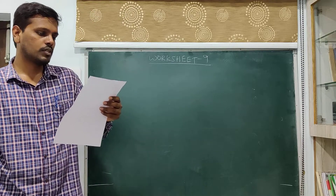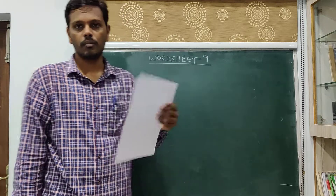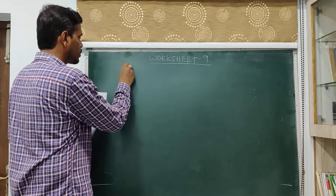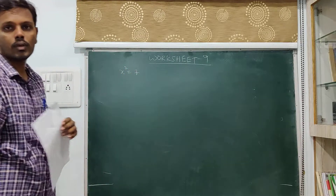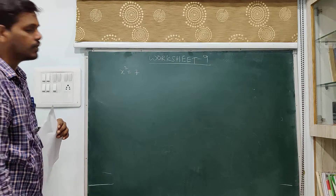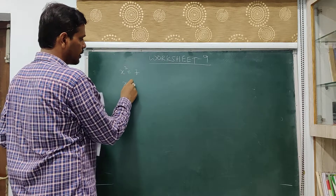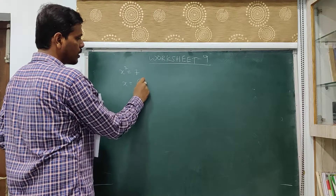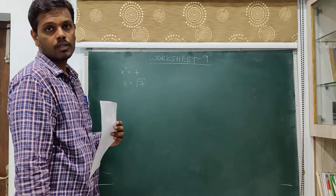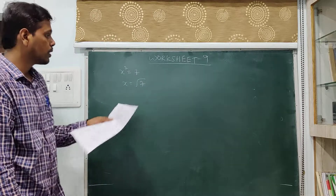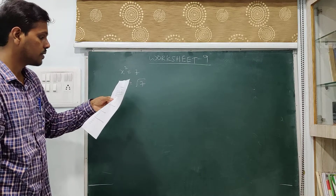In the following equations, find whether the variables represent a rational number or an irrational number. Let's look into this. x squared is equal to 7. x is called the square root of 7, so x is equal to square root of 7. We cannot extract the square root of 7 because 7 is not a perfect square. Therefore, that is an irrational number.